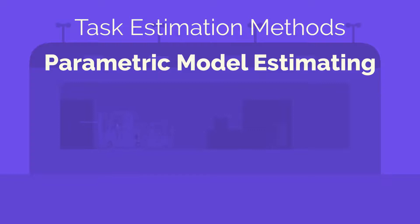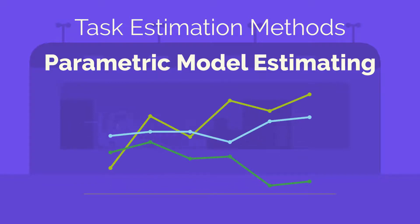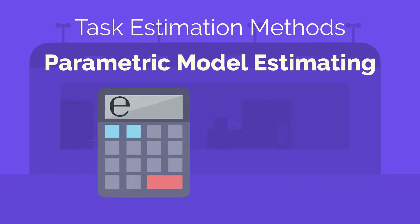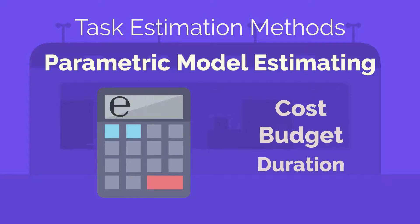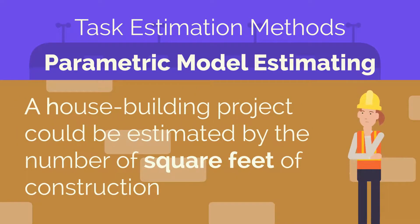Parametric model estimating. This technique uses a statistical relationship between historical data and other variables to calculate an estimate for activity parameters, such as cost, budget, and duration. For example, a new house building project is estimated by the number of square feet of new construction.